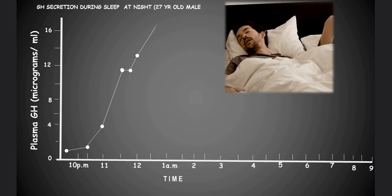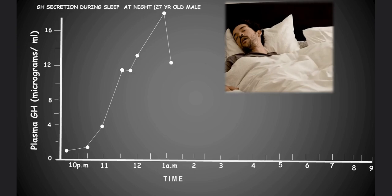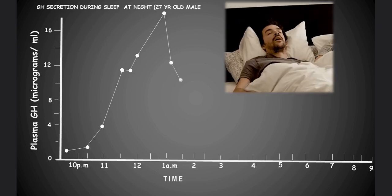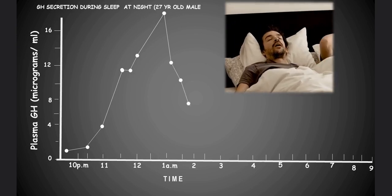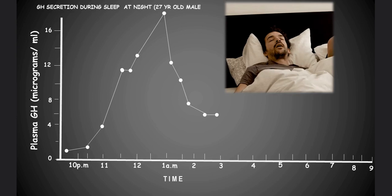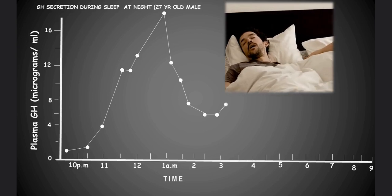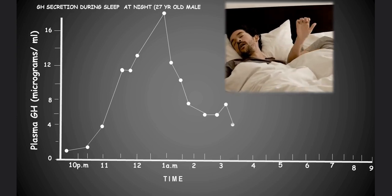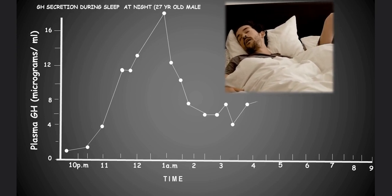In an experiment that aimed to monitor GH secretion during sleep at night, it was observed that there was a significant rise in GH concentration in blood within the first 90 minutes from the onset of sleep, but the time it took to reach peak GH secretion ranged from 39 to 165 minutes and the average time it took to reach peak GH secretion among the subjects was 70 minutes.